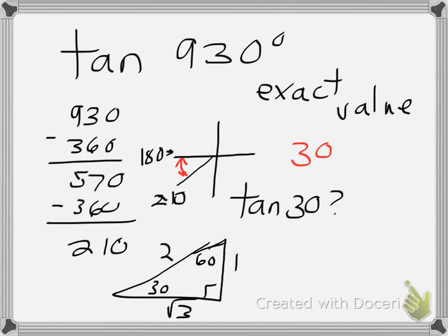So using our 30-60-90 triangle, what is tangent of 30? Well, that's going to be 1 over square root of 3.